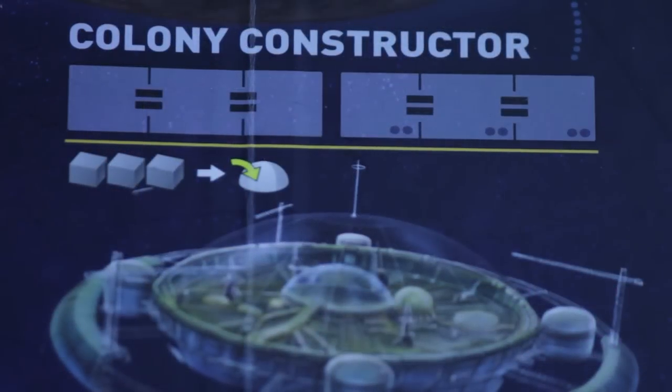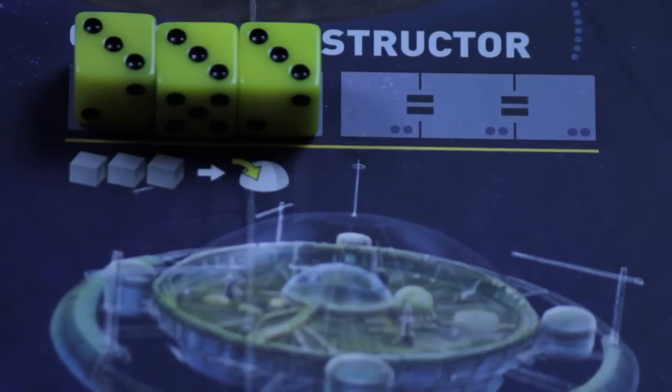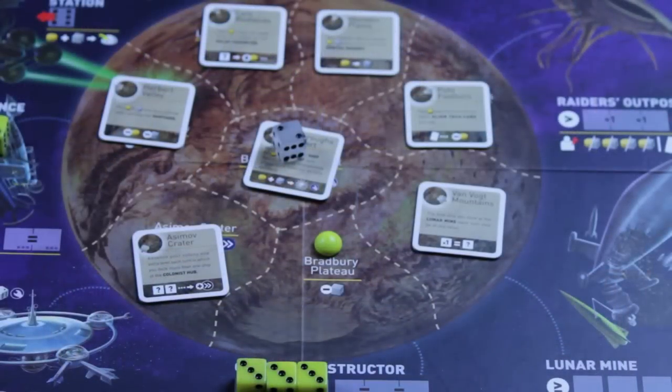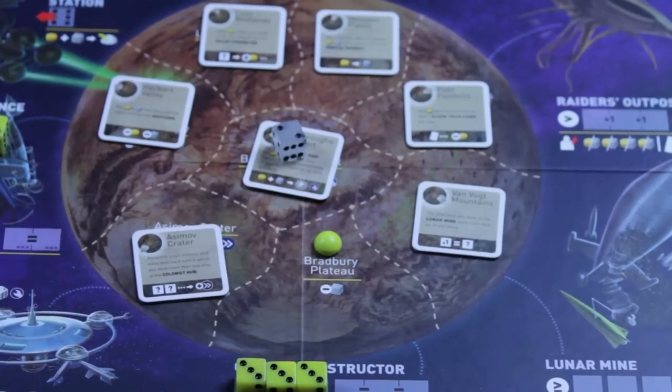There are two other ways to get colonies on the board that are equally simple, yet much more interesting. The colony constructor requires 3 of a kind to activate and a payment of 3 metal. Because 3 of a kind is difficult to roll, it is very exciting when it happens naturally and very rewarding when you can use your alien tech cards to manipulate the dice into a triple. The 3 metal cost also means that you have to be prepared for the rare occurrence and that your opponents can make it even more difficult for you by blocking access to the mine or stealing your metal. There's luck here, but it's still very enjoyable.